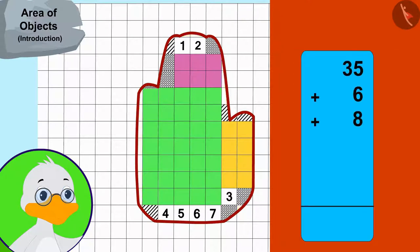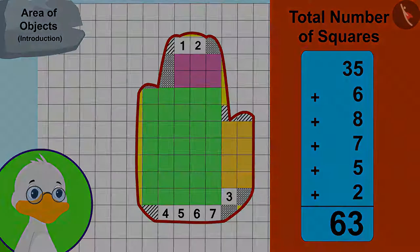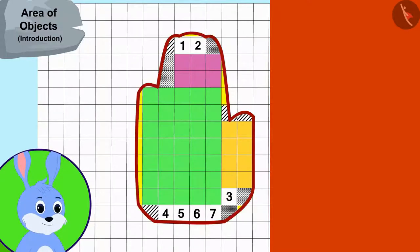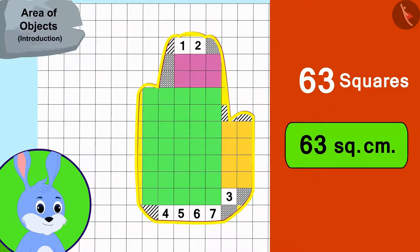Now, uncle added all these numbers to find the total number of squares. In this way, there are a total of sixty-three squares in Bunny's hand impression. In other words, the area of Bunny's hand impression is sixty-three square centimeters.